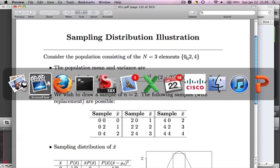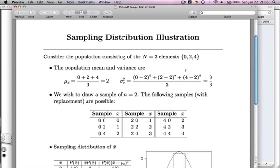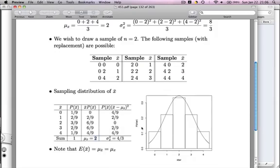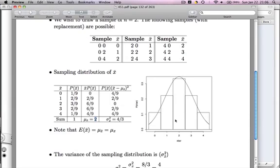So notice that the expected value of x bar, so the mean of this distribution, is exactly the same as the mean of the population distribution. What does the population distribution look like? Let me sketch it for you. So here's zero, two, and four, and we have three bars, all of size one. So that's the population distribution. And the mean here is also two. So the mean of the population distribution equals the mean of the sampling distribution.